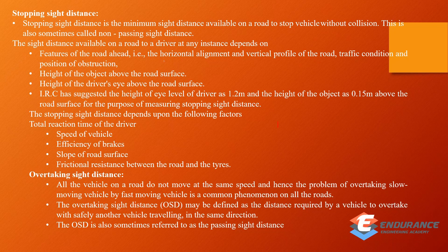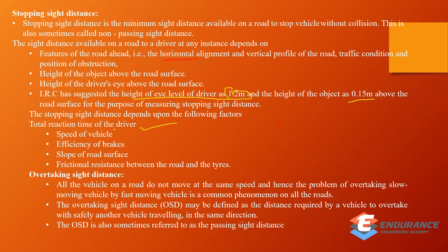The factors affecting stopping sight distance include: horizontal alignment, the vertical profile of the roadway, the height of the object, the road surface, and the driver's height. For IRC, the height of the driver's eye level is 1.2m and the height of the object is 0.15m, measured from the road surface. For stopping sight distance, the total reaction time of the driver, the speed, braking, the slope of the road, and tire friction resistance are all considered.